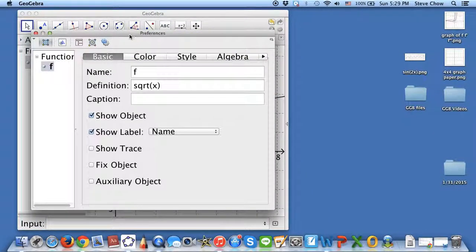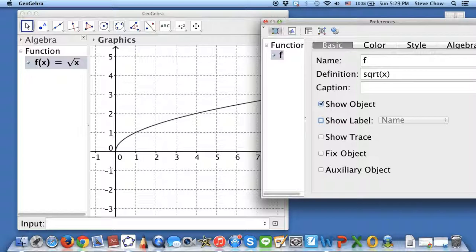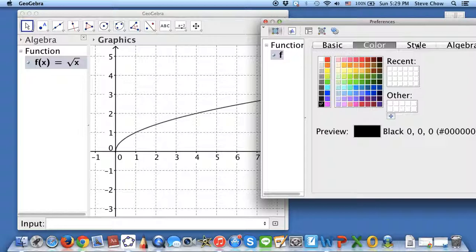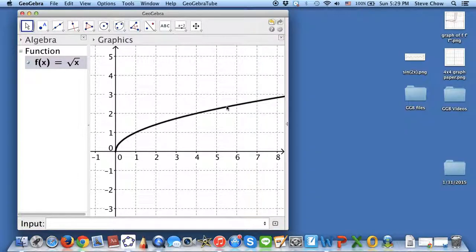I want to uncheck the label, so GeoGebra won't show you the little f. And I will keep this in black. For the style, let me make the curve thicker. Now this is square root of x.